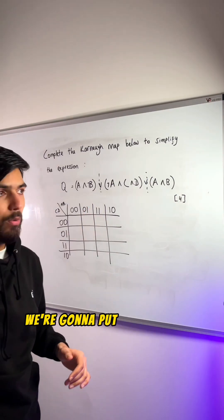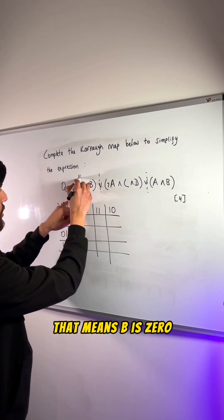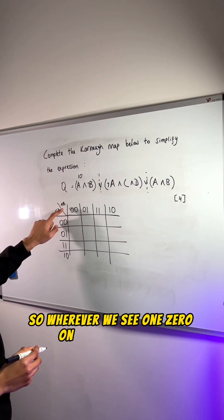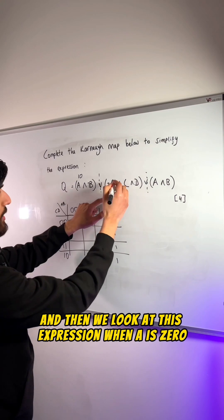And we look at the first expression. We're going to put a 1 where A is 1 and not B, that means B is 0. So wherever we see 1, 0 on the top heading, that's where we're going to put 1.